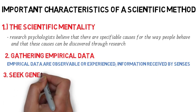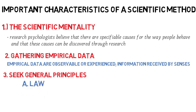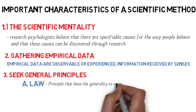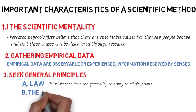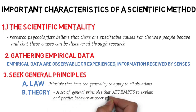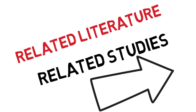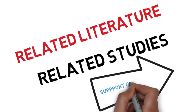Therefore, we must also seek general principles. Kailangan makahanap tayo ng mga laws or theories that will support our findings. We have two types of general principles: law and theory. We call it law if the principles have the generality to apply to all situations. We call it theory naman if we have the understanding on the principle and we already devised and tested an interim explanation, kaso nga lang we do not have enough information to state a general law. And we must remember that old theories can be replaced by new theories with greater explanatory power. Kaya di ba sa thesis or research paper natin hindi mawawala ang related studies and literatures kasi we needed to support our conclusion.